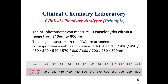The photometer used by Beckman has 13 wavelengths ranging from 340 nanometers to 800 nanometers. These are the 13 wavelengths used by Beckman analyzers.